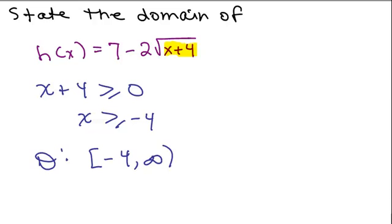And you could do a little quick check. What would happen if I had plugged in a number smaller than negative 4? Like for instance, negative 10. What happens if you plugged in negative 10 into here? Well, you'd have 7 minus 2 times the square root. What happens when you plug in negative 10? Negative 10 plus 4 is negative 6. This is now not a real number and we are only looking for outputs that are real numbers. So there's an example. That's not going to work.